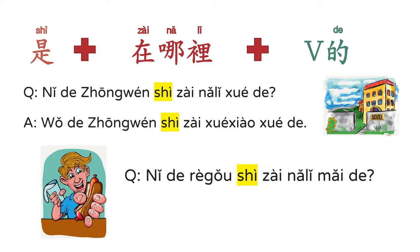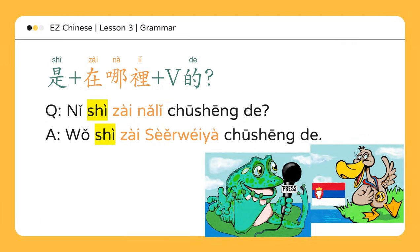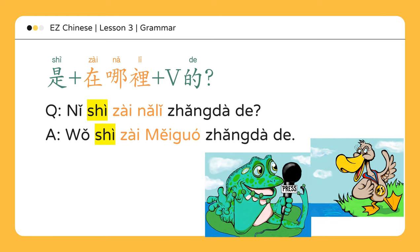你的热狗是在哪里买的? Where did you buy your hot dog? 你是在哪里出生的? Where were you born? 我是在斯尔维亚出生的。 I was born in Serbia. This sentence pattern emphasizes where the action occurs. 你是在哪里长大的? Where did you grow up? 我是在美国长大的。 I grew up in America.